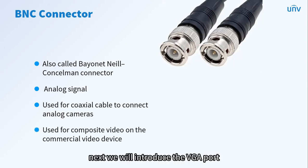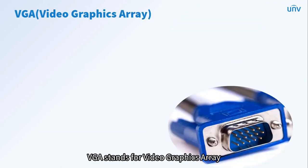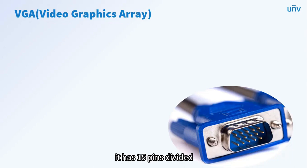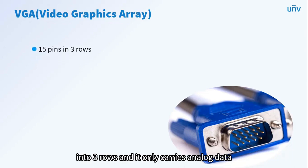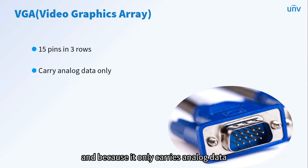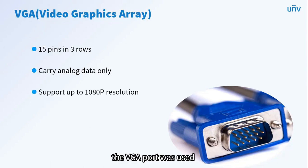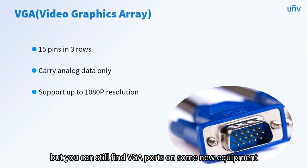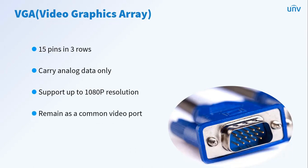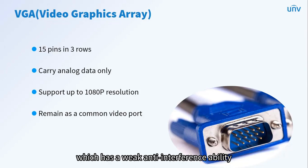Next, we will introduce the VGA port. VGA stands for Video Graphics Array, which is an older port first introduced in 1987. It has 15 pins divided into 3 rows and only carries analog data. Because it only carries analog data, the quality of the video may degrade at higher resolutions and longer cable lengths. The supported maximum resolution is 1080p. VGA was used on bulky CRT monitors, but you can still find VGA ports on some new equipment such as NVRs and new LCD monitors. VGA is an old design supporting analog signals only, which has a weak anti-interference ability, so color distortion may exist.